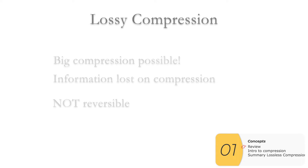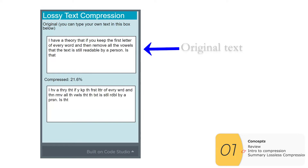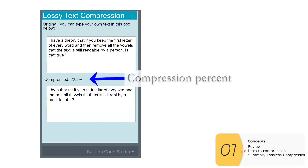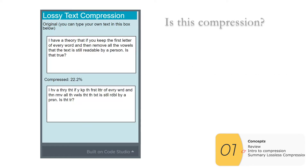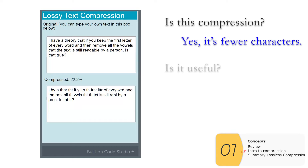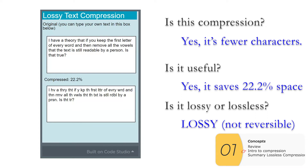This widget from Code.org gives an example of lossy compression. At the top we have the original text, at the bottom we have the compressed text, and it's compressed 22%. What's happening here is that we're removing every vowel, and the text is still readable. This is compression because we have fewer characters, meaning fewer bits or bytes. It's useful if you need to save space. The question is: is this lossy or lossless? The answer is lossy, because it's not reversible.